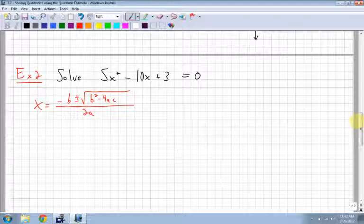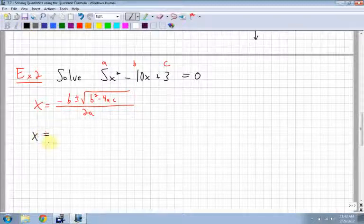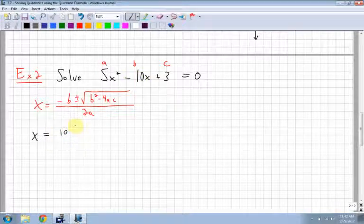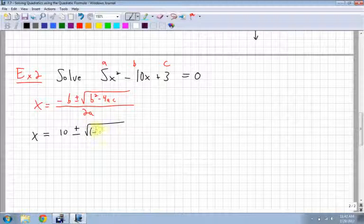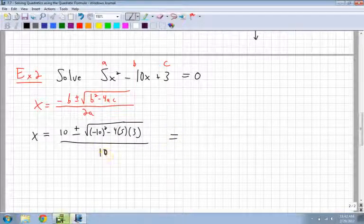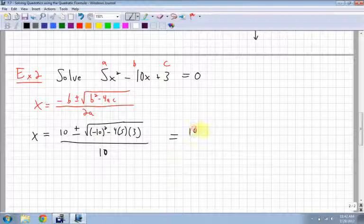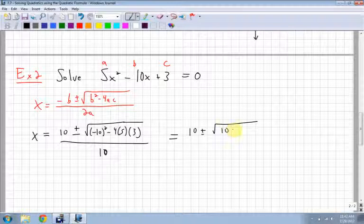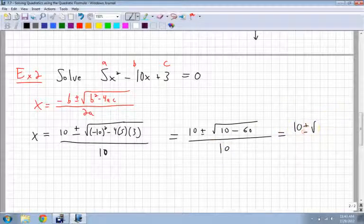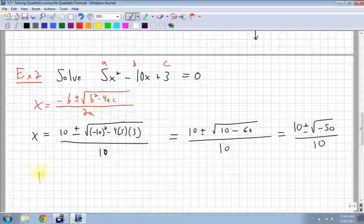Alright. Example two. Let's solve 5x squared minus 10x plus 3. So same thing. I have my a, b, and my c values. I plug them into x equals negative b plus minus. So I get x equals negative b, 10 is already negative, so it's going to become positive 10, plus or minus the square root of negative 10 squared minus 4 times 5 times 3, all over 2 times 5, which is 10. I can do a lot of this in my head.